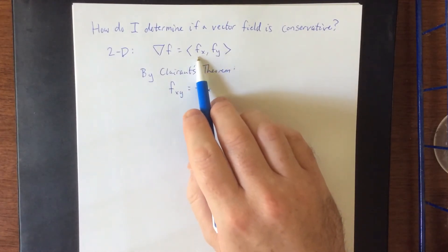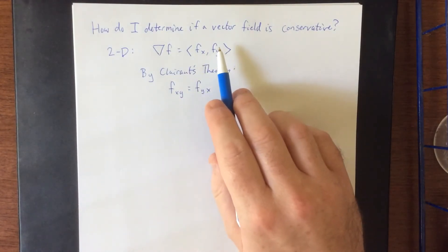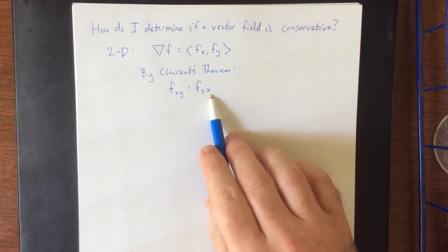Which means that if I take the first component and differentiate it with respect to y, I get the thing on the left side. And if I take the partial derivative of the second component with respect to x, I get the thing on the right-hand side.